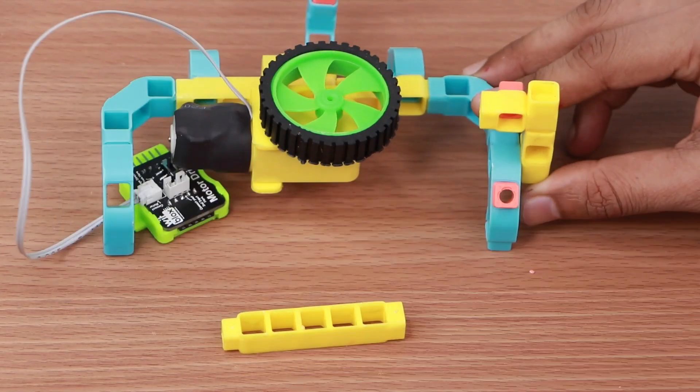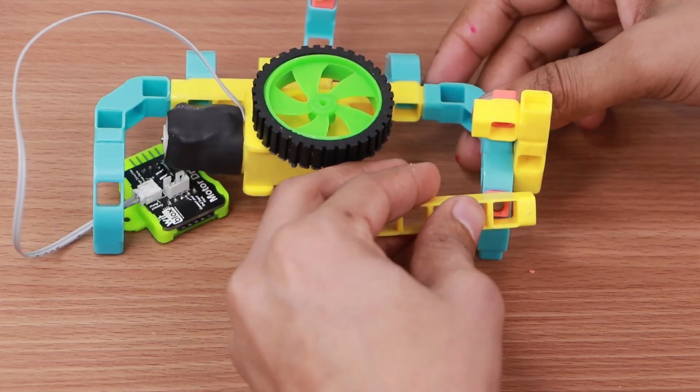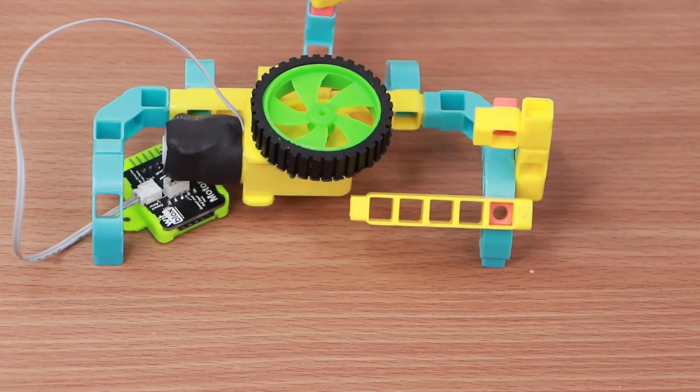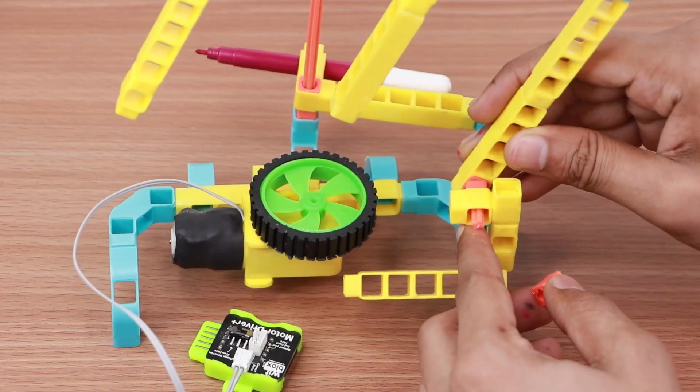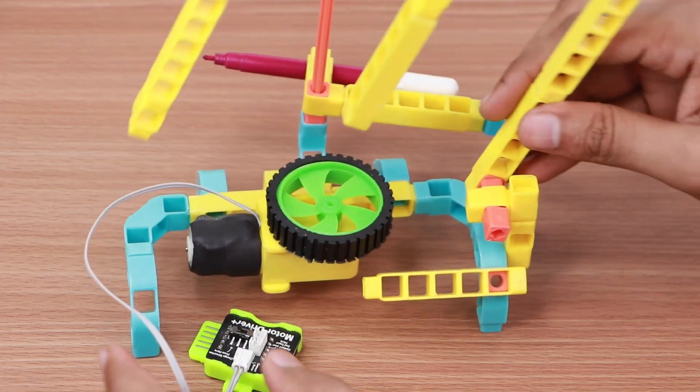Take one mm coupler and one five-hole beam to the base for placing the blocks. Attach the top cover to the assembly. Attach one BO shaft to the small axle.